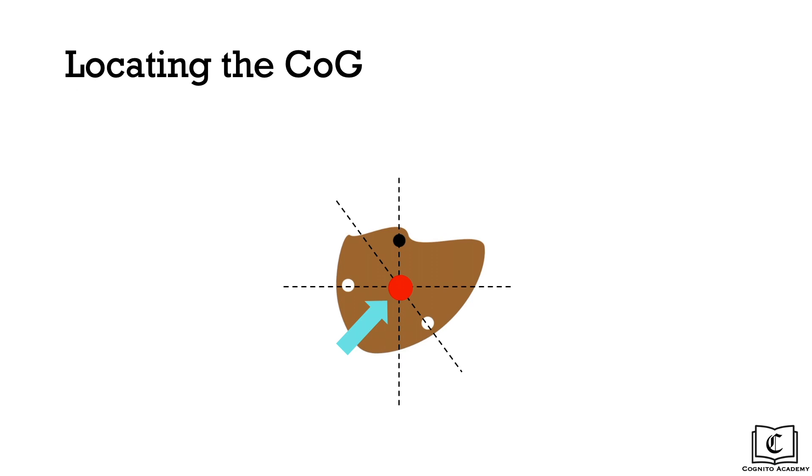So, what's the point of finding the center of gravity of an object? Firstly, it simplifies things because we can take its whole weight to just act from that one point. But also, it affects the stability of an object.